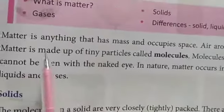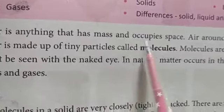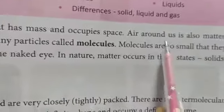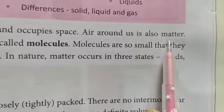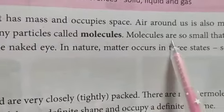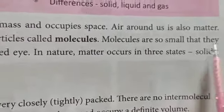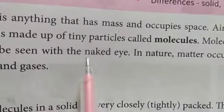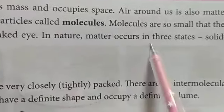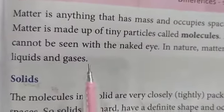So what is matter? Matter is anything that has mass and occupies space. Air around us is also matter. Matter is made up of tiny particles called molecules. Molecules are so small that they cannot be seen with the naked eye. In nature, matter occurs in three states: solids, liquids and gases.